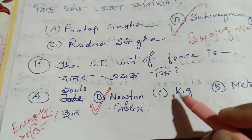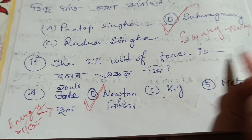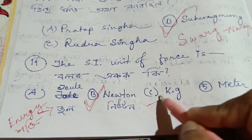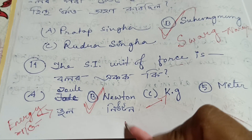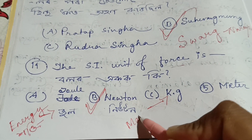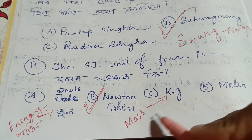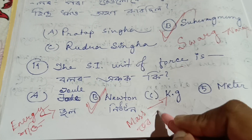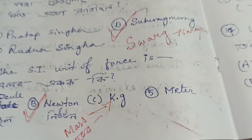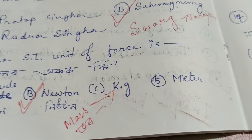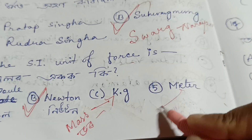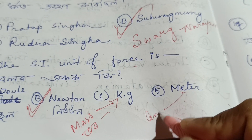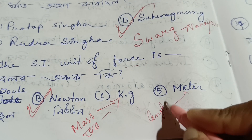KG is the SI unit of mass. Meter is the unit of length.